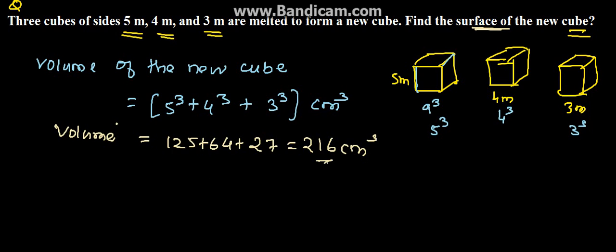So the side of the new cube will be cube root of volume, because a³ is the formula. So this comes to cube root of 216.